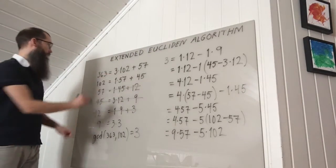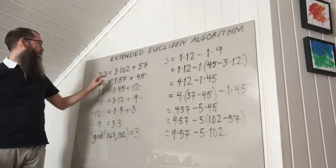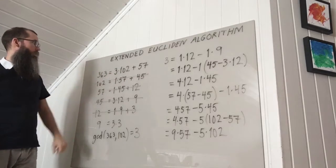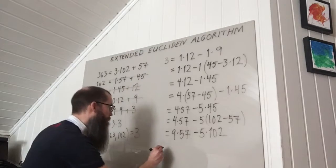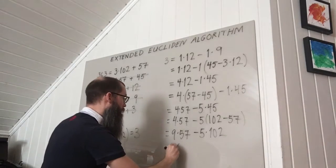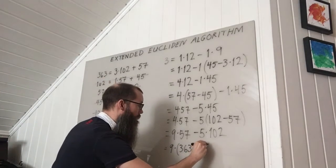I continue to the first line. 57 is 363 minus this term when I move it to the other side. So I can replace 57 by 363 minus 3 times 102.